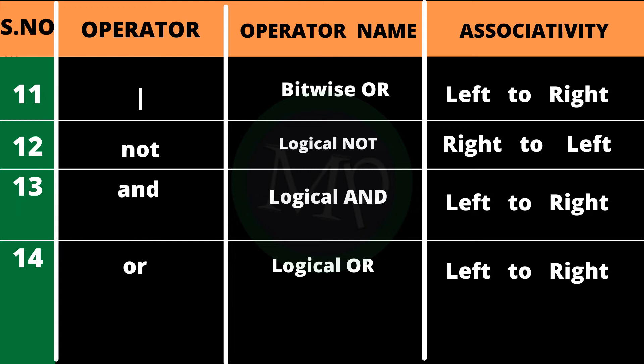The next highest priority is the logical NOT operator. If you have more than one logical NOT, evaluation goes right to left. After that is the logical AND operator — left to right. Then the logical OR operator — also left to right.